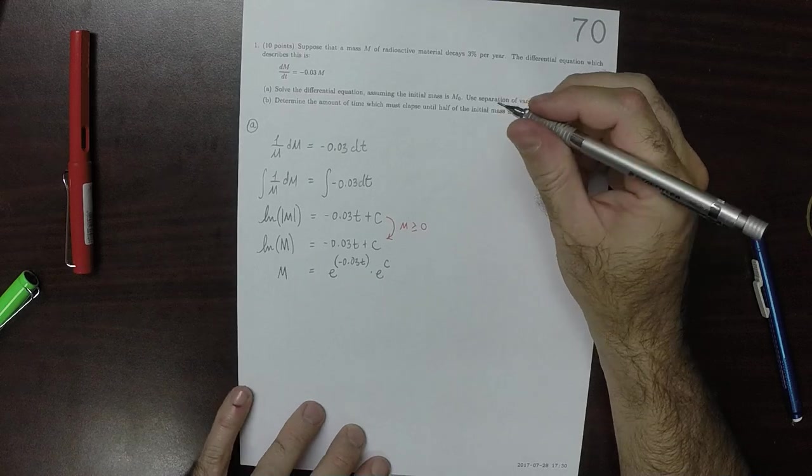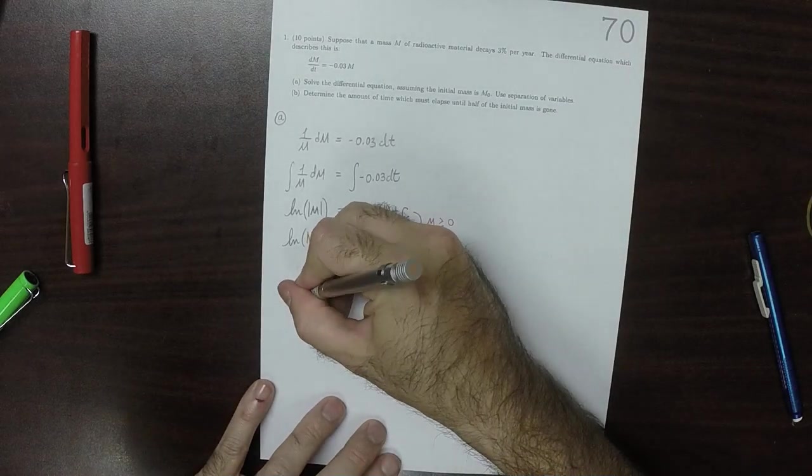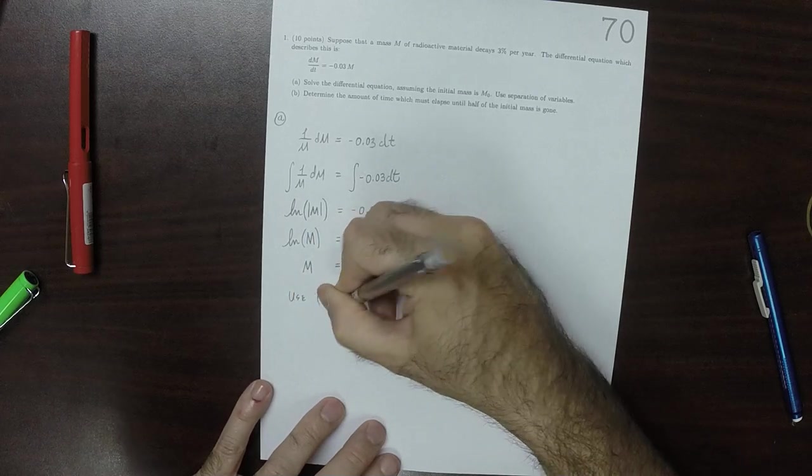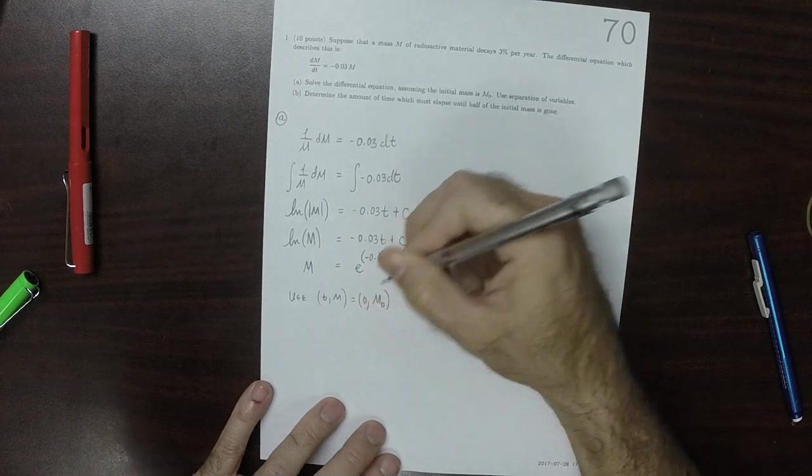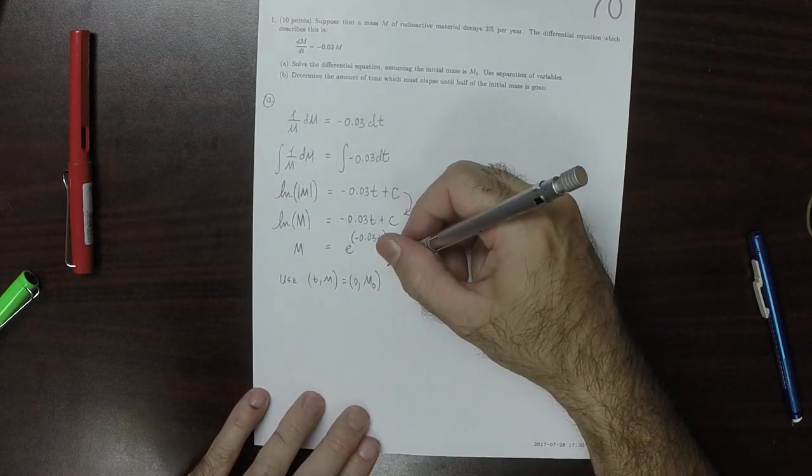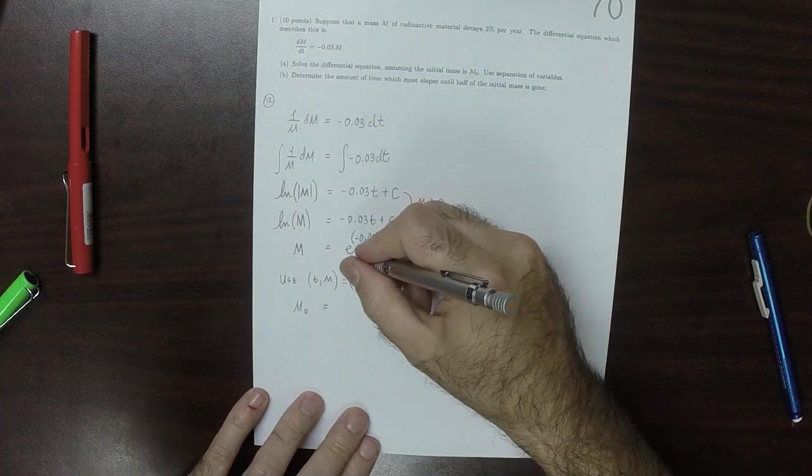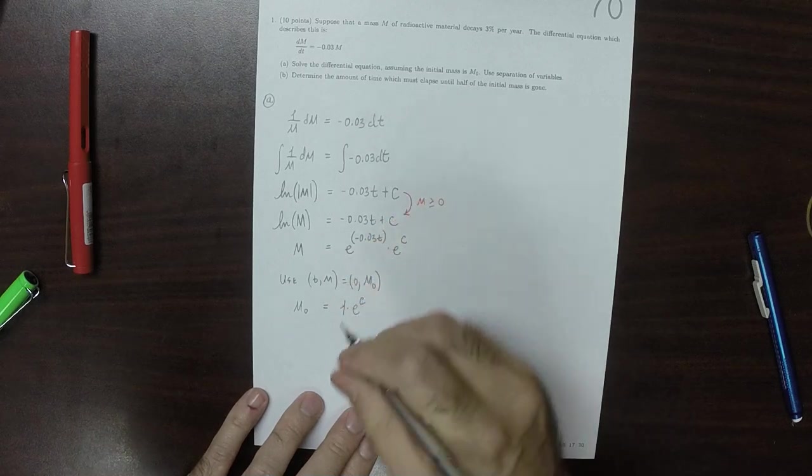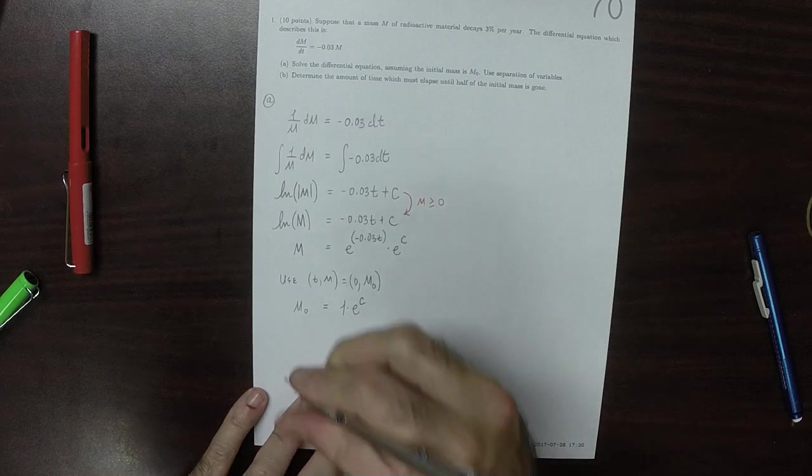And then we can figure out the exponential of C by using T equals 0, m0 is part of the solution. So m0 is exponential of 0 is 1, times the exponential of C. So m0 is the exponential of C.